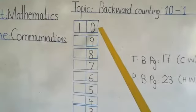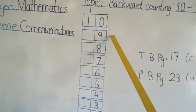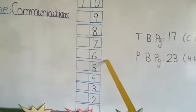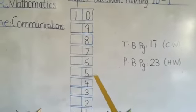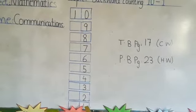Backward counting from 10 to 1. Read: 10, 9, 8, 7, 6, 5, 4, 3, 2, 1.